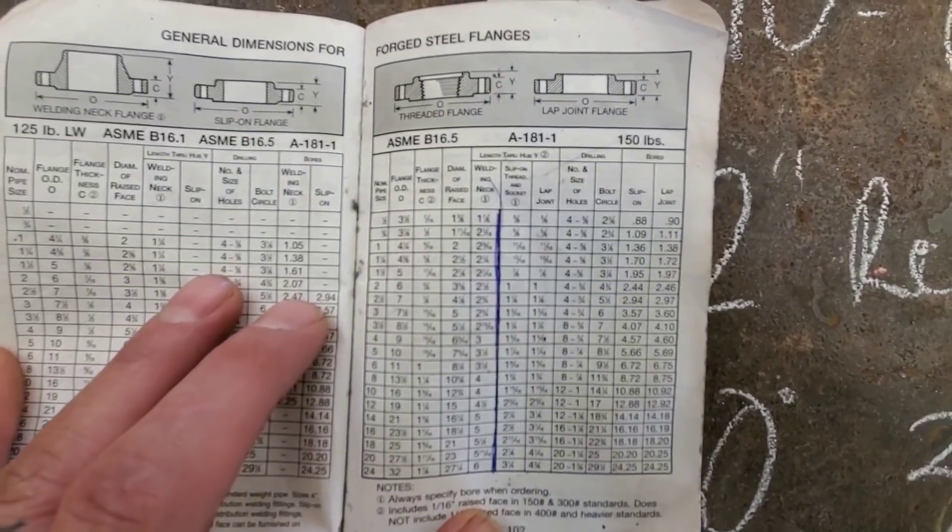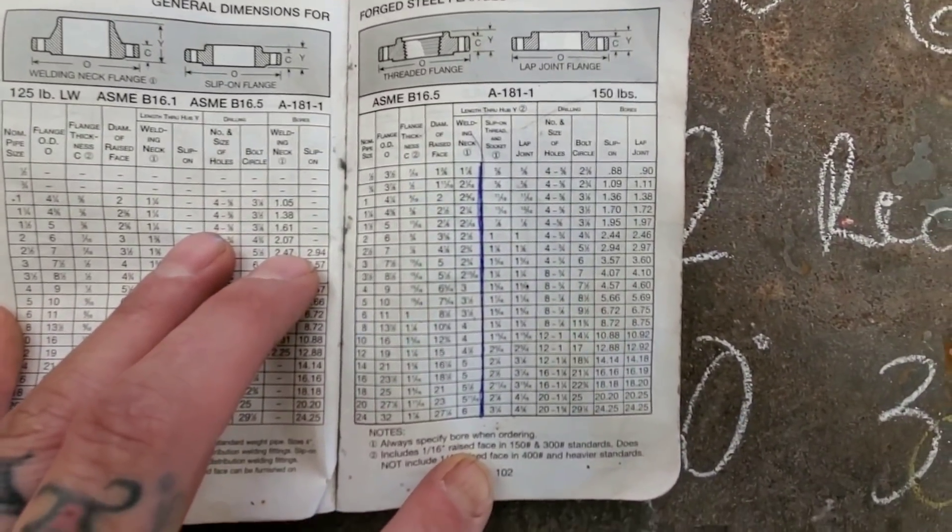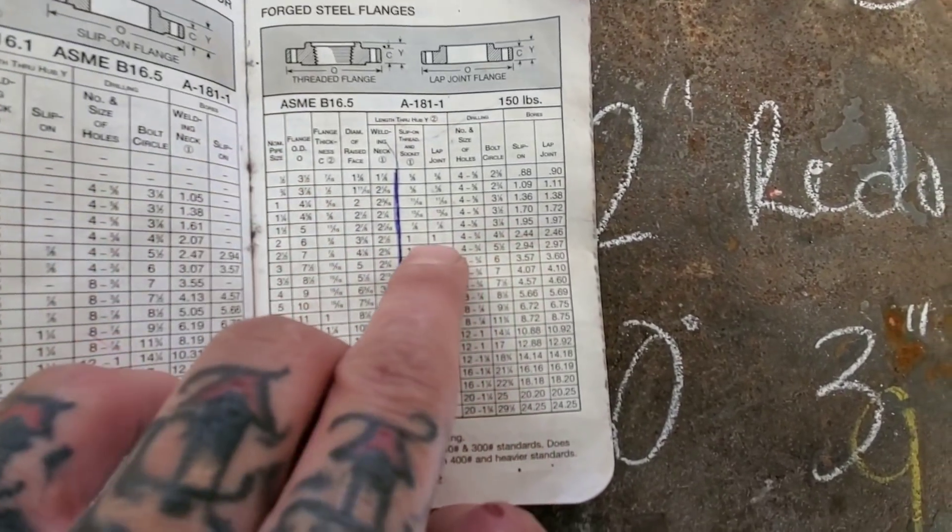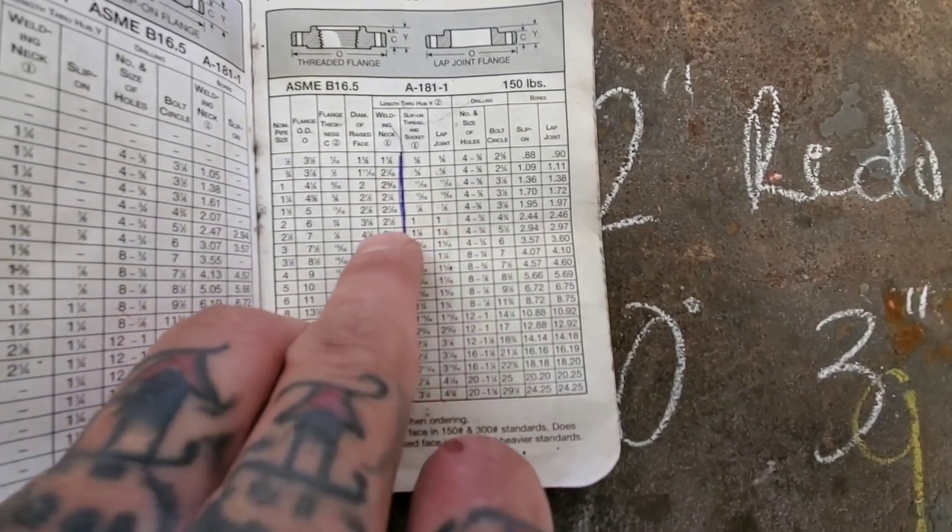You can see I got a blue line right here next to the weld neck, the welding neck, because I'm only doing butt weld. It's the welding neck and I do that to help myself find it quicker in my book.